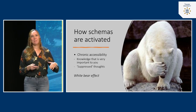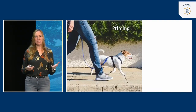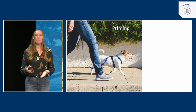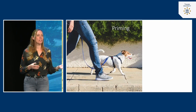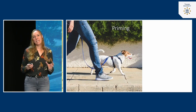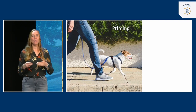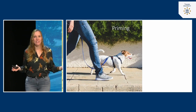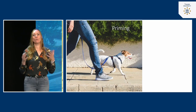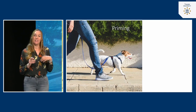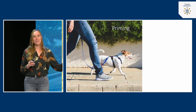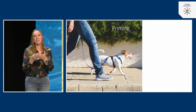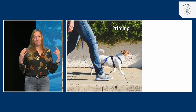Trying to suppress thoughts actually leads to chronic accessibility. But most schemas are temporarily accessible, and this is called priming — the temporary activation of certain knowledge. Some topics just become more relevant at a certain point in time. For example, a year ago my oldest son really wanted a dog and talked about it all the time. When we were out walking, he constantly pointed out dogs everywhere, because the concept of dogs was temporarily active for him.